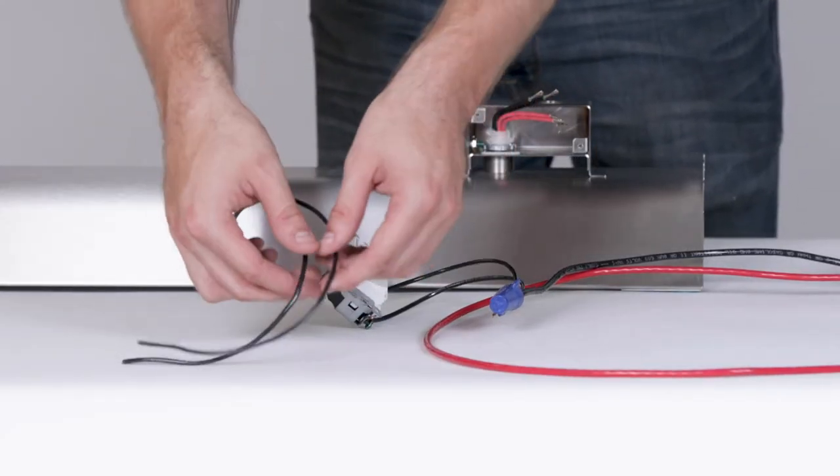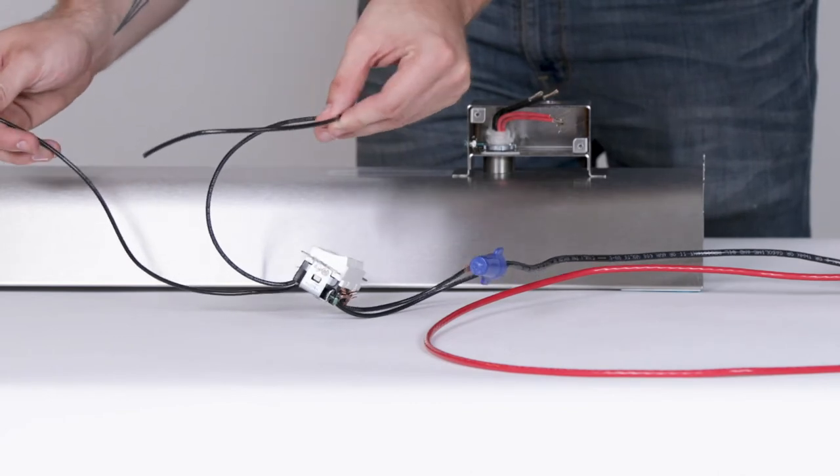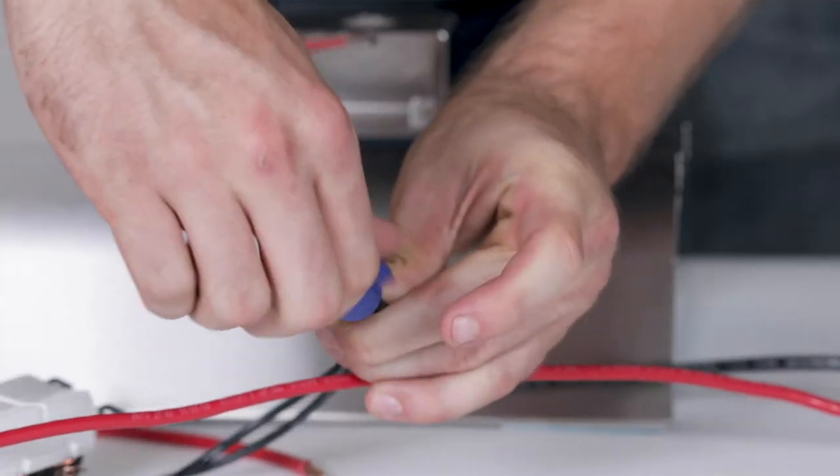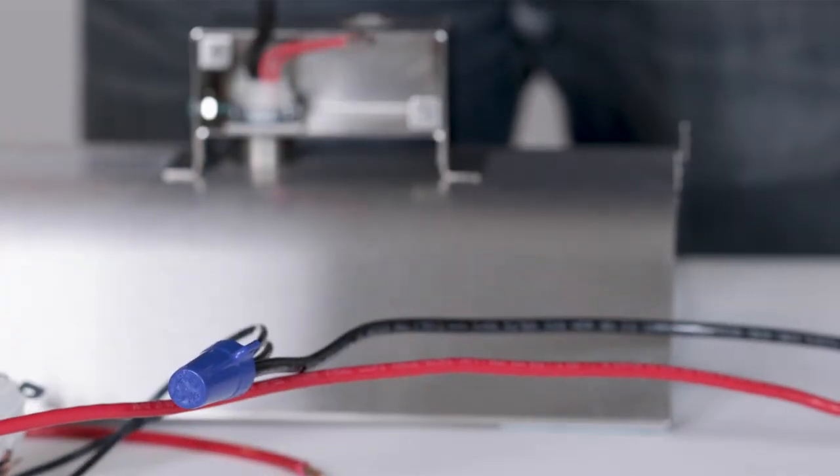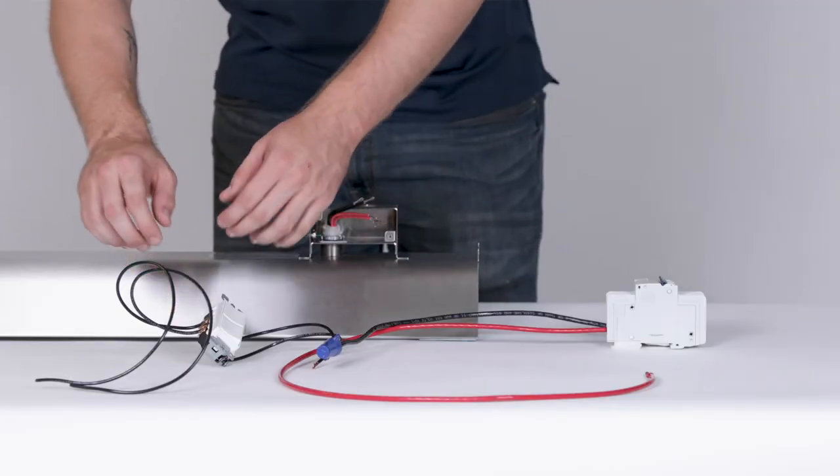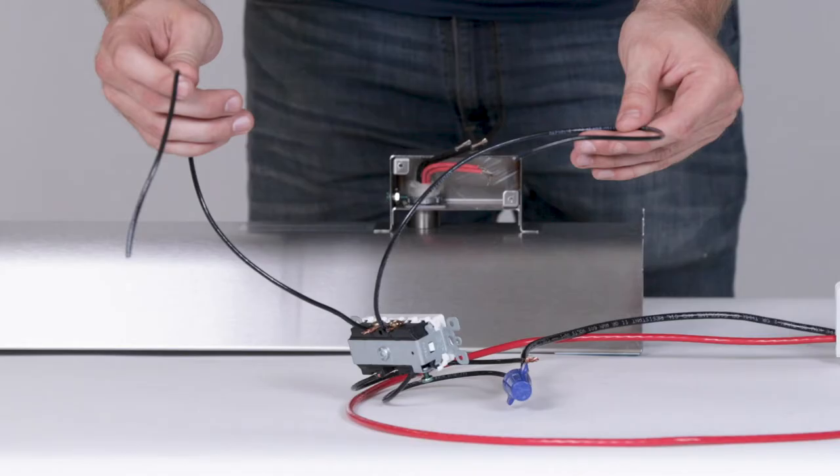We recommend using 12 gauge wire when tapping conductors that are 10 gauge or larger. We've provided a large blue wire nut to aid in this process. Now that we've taken care of the switch input, we'll be referring to the output of the switch as line 1A and line 1B.